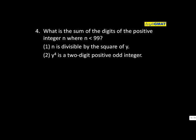Question number 4: What is the sum of digits of the positive integer n where n is less than 99? Statement 1: n is divisible by the square of y. This doesn't help obviously because it involves y, so not sufficient. Statement 2: y to the power 4 is a two-digit positive odd integer.